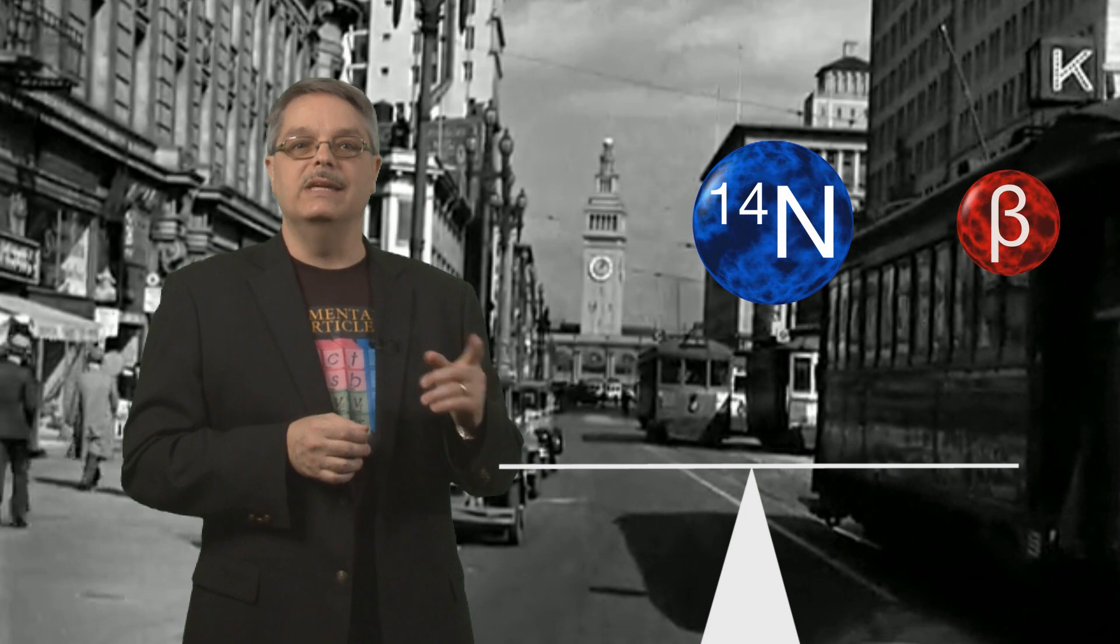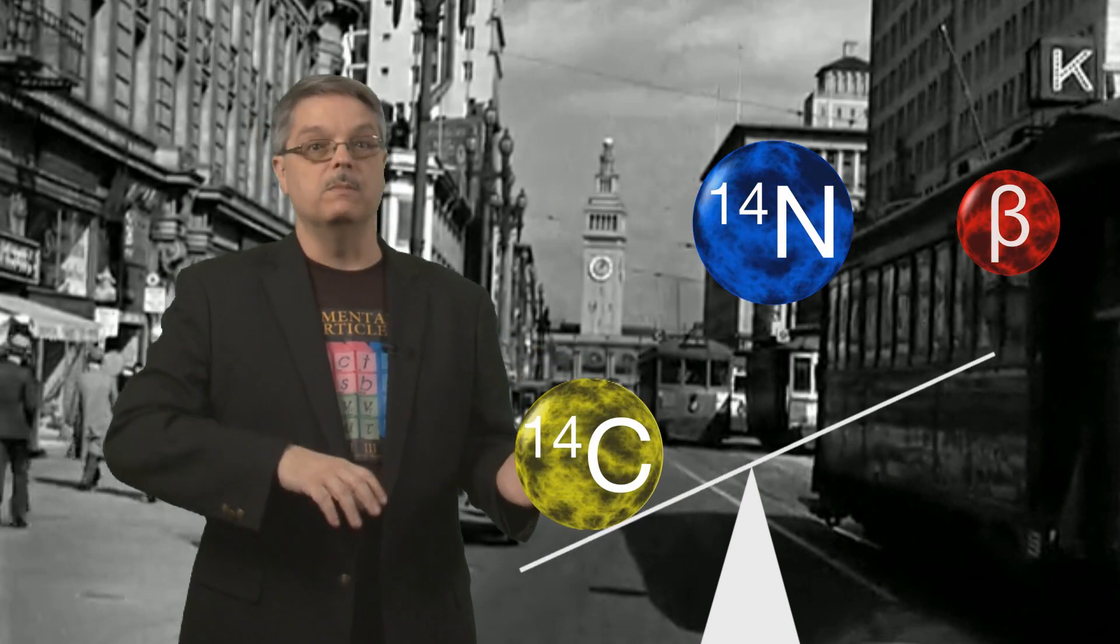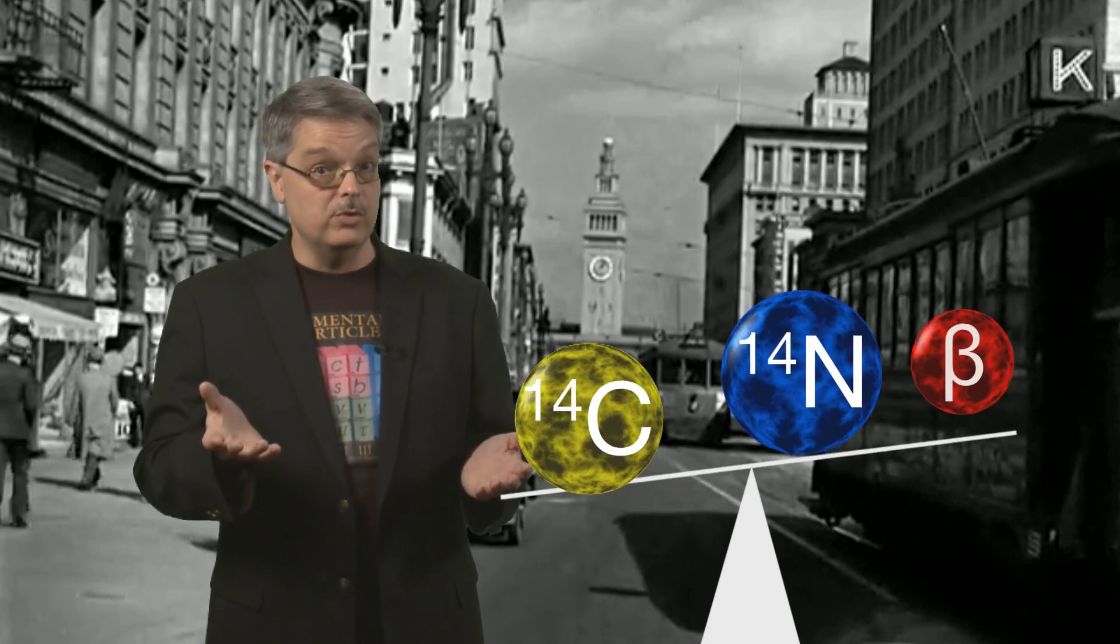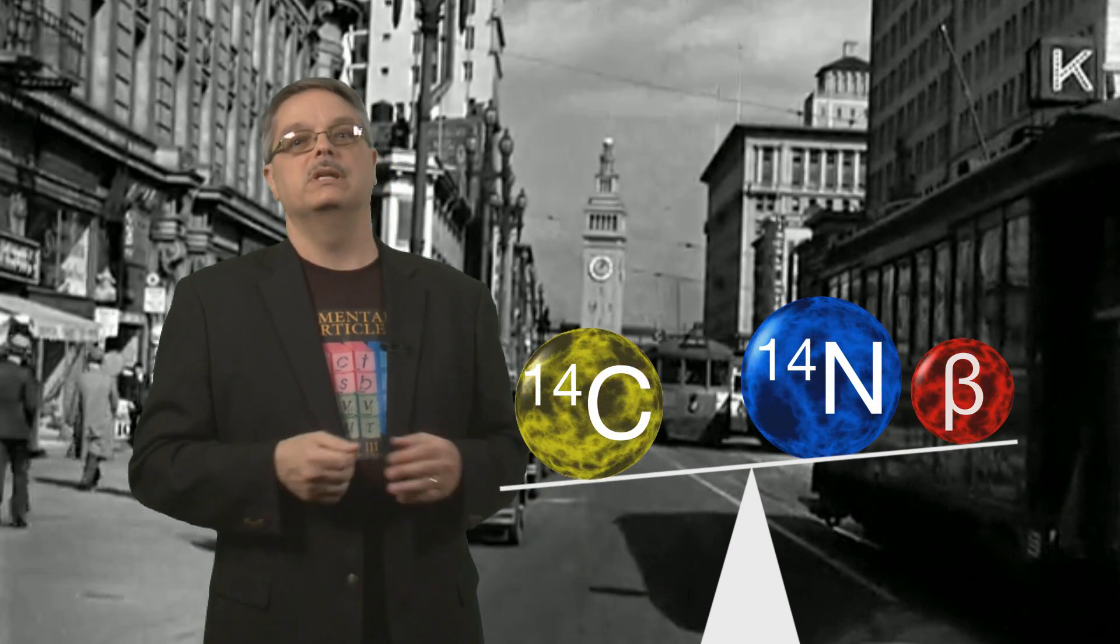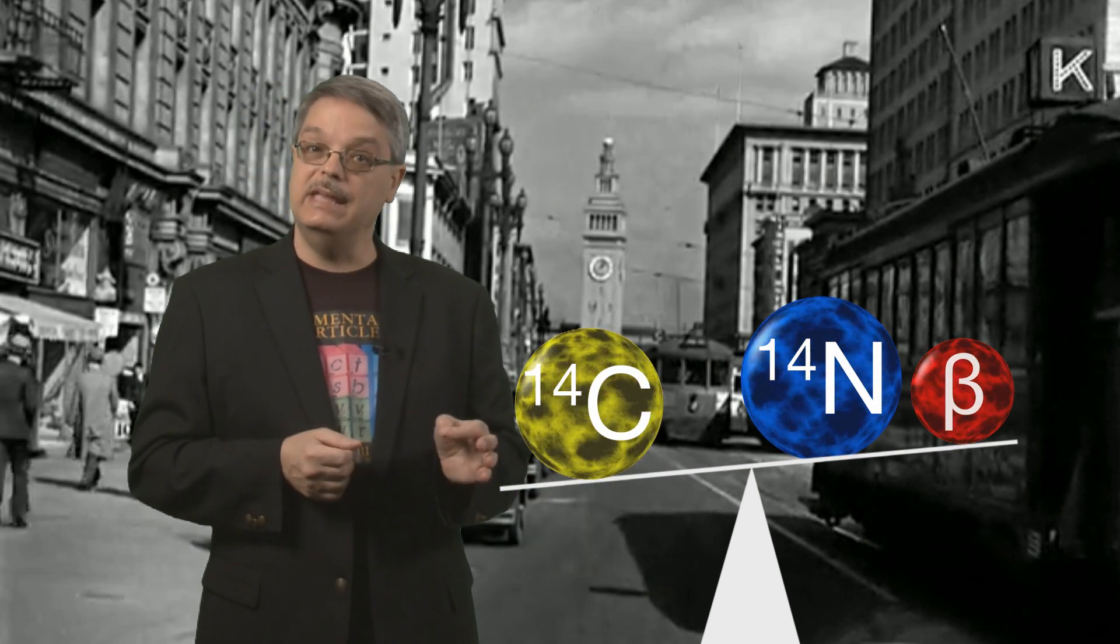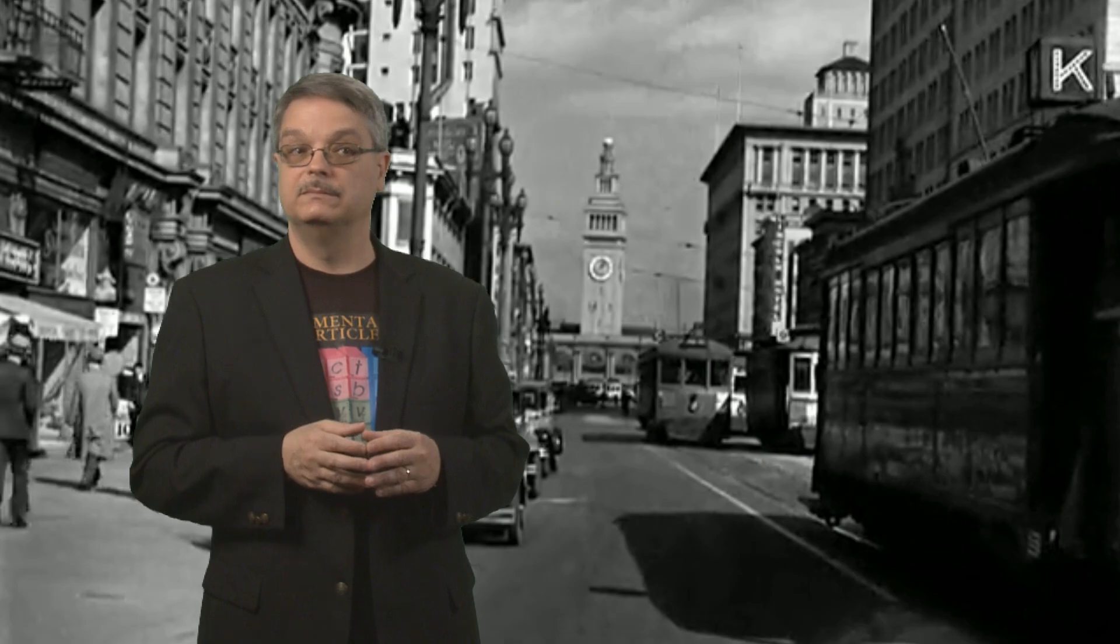The problem was that when the energy of the original nucleus was compared to the combined energy of the daughter nucleus and the electron, the books didn't balance. After the decay, energy was missing. Since one of the most dearly held ideas of physics is that energy can't be created or destroyed, the observation of energy loss in beta decay sent the research world into a tizzy. Lots of ideas were considered, including the possibility that perhaps in the quantum world energy could disappear.